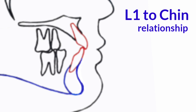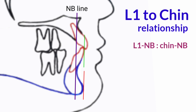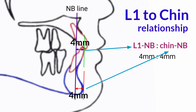The lower incisor to chin relationship is calculated as the ratio of the linear distance from the labial surface of the mandibular central incisor to the NB line, over the linear distance of the chin to the NB line. The ratio between these two measurements to the NB line should be the same.